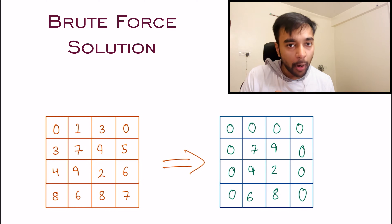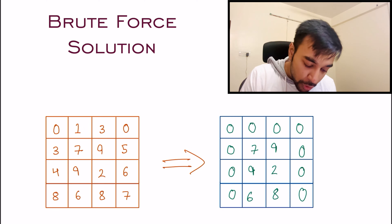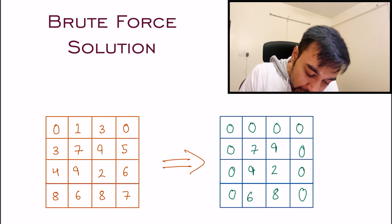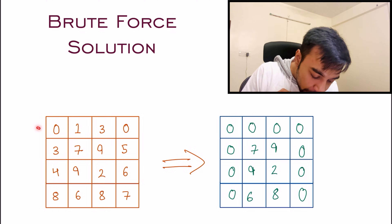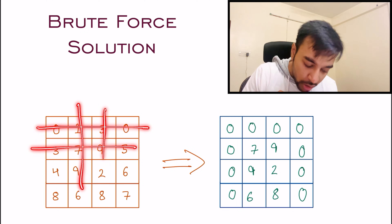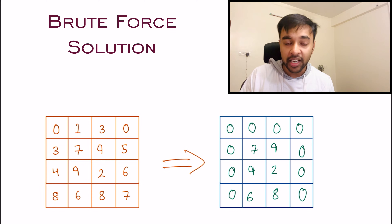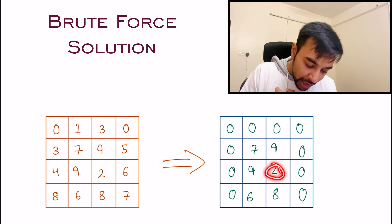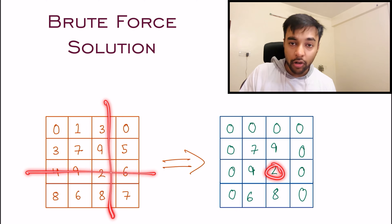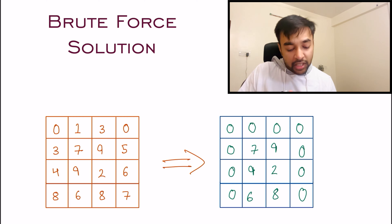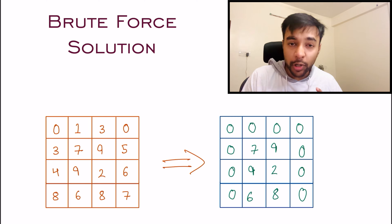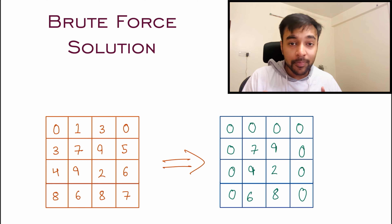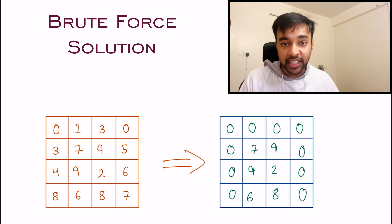But do you see the problem with this approach? To identify the state of each new element, you have to traverse the entire row and all columns again and again for every element. This ends up taking a lot of time, so this is not the desired solution. What can we do about it? Let us try to start optimizing.